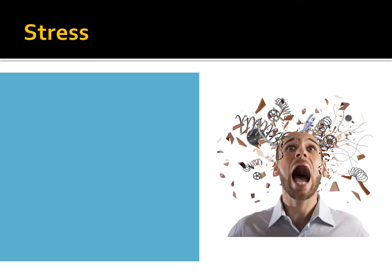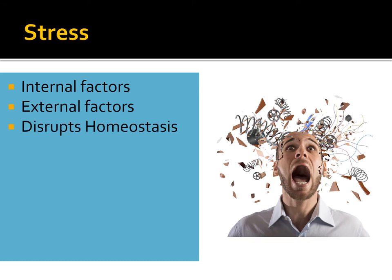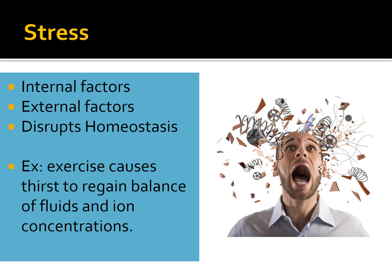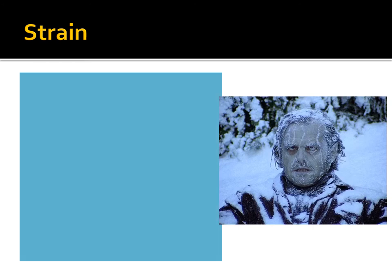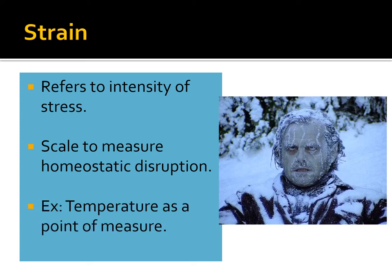Why do humans use culture and biological mechanisms to adapt to the environment? We're really responding to different stresses that the environment places on us. Stress can be internal factors like disease or external factors like environment. Anything that disrupts homeostasis is considered stress. For example, exercise causes thirst, and to regain the balance of fluids and ion concentrations, you begin to drink water — your body is responding to the stress of dehydration. Along with stress comes strain, which is our measurement of how intense stress is — the scale to measure homeostatic disruption.